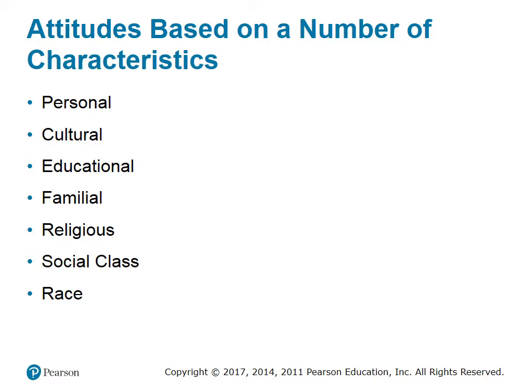Attitudes are based on a number of characteristics, which are personal, cultural, educational, familial, religious, social class, and race. Personal characteristics are the physical and emotional ingredients of an individual, including size, age, and social status. Cultural characteristics include the environment and lifestyle of a particular country or geographic area. Educational characteristics can also come into play, based on level of education.